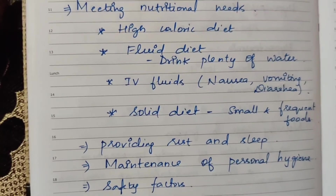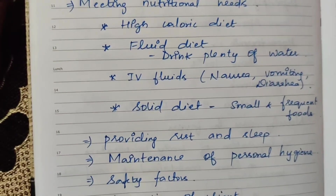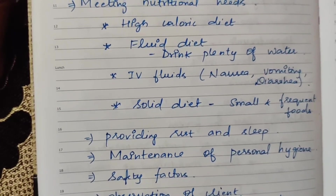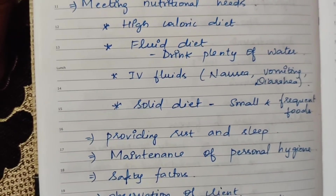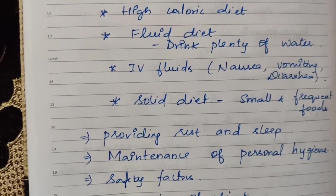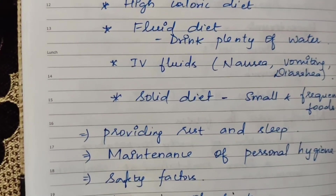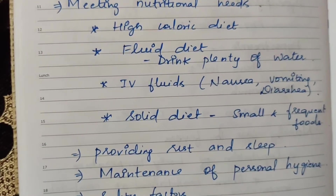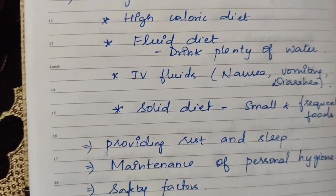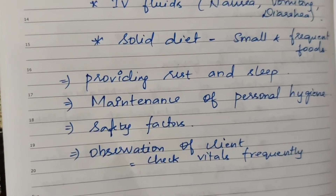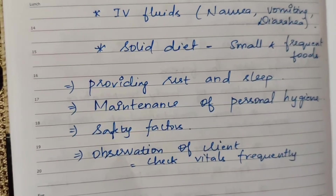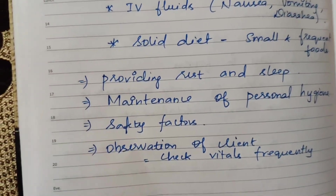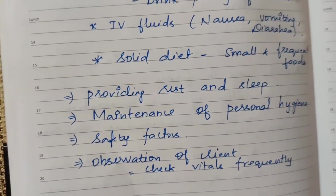Fluid diet for dehydrated patients — advise drinking plenty of fluids and water. Apply emollients to lips and dry mouth. In case of nausea, vomiting, or diarrhea, administer IV fluids. For loss of appetite, provide small and frequent meals. Ensure rest, sleep, and a comfortable, calm environment.